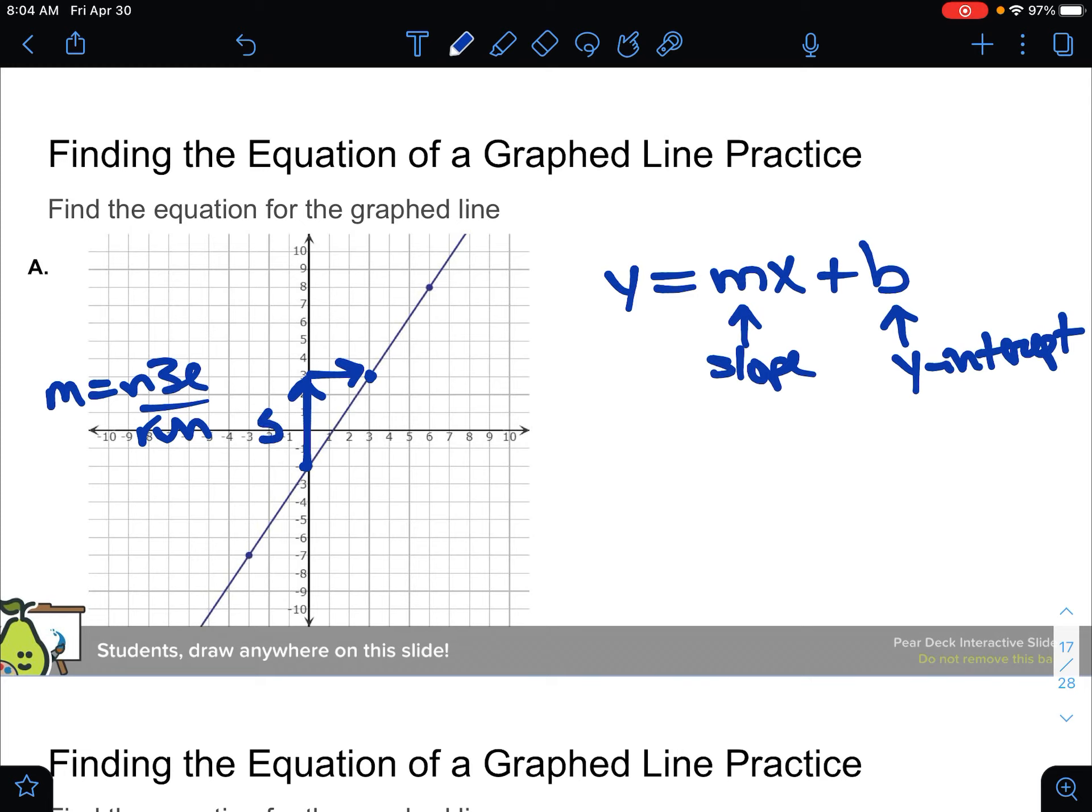So it's rising from negative two up to three. That's a rise of five, and it's running right three. So our rise over run would be five over three. This is a positive slope because from left to right, this is increasing.